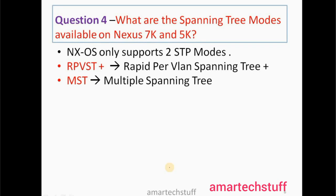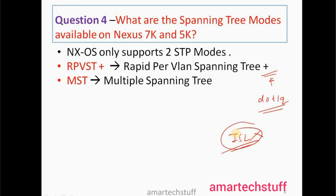Question number four: What are the spanning tree modes available on Nexus 7K and 5K? NX-OS supports only two STP modes. One is RPVST+, which is Rapid Spanning Tree with PVST — the plus sign indicates that only 802.1Q is supported on trunk links, as ISL is not supported on Nexus switches. The other mode is MST. By default, the STP mode on all Nexus boxes is RPVST+.